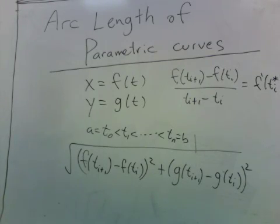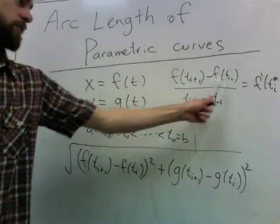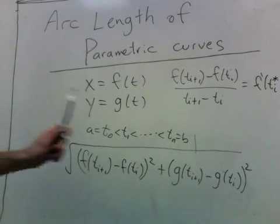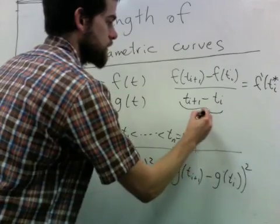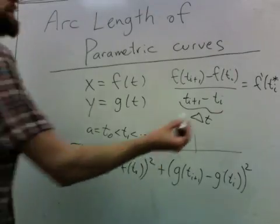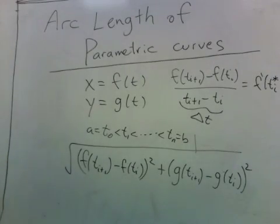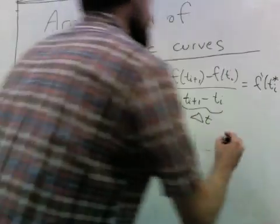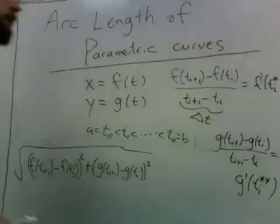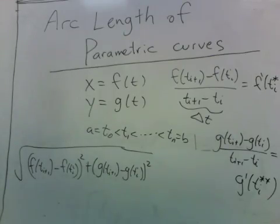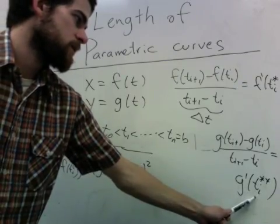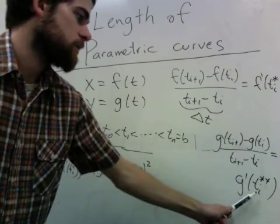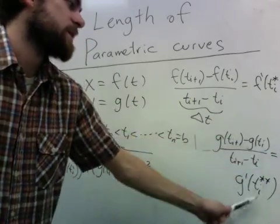to write down the difference between f at the two points and the difference between the two t values, and this is delta t, as the derivative at some point in between the two. We can do the same thing with g, except the mean value theorem only tells us that there's some point that this is equal to the derivative, and it may not be the same as the one here.